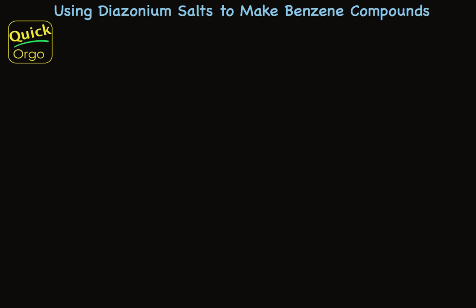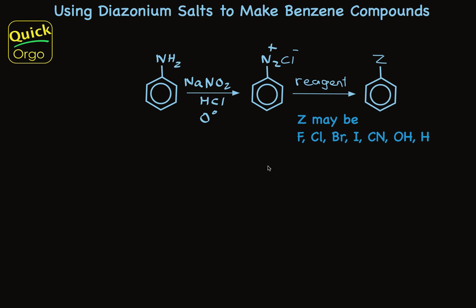I want to show you a really slick method for attaching substituents directly to a benzene ring. When you have an NH2 group on the ring, that can be transformed into something called a diazonium salt using nitrous acid. Sodium nitrite in HCl is a way of making nitrous acid. It's important to keep the reaction cold, because diazonium salts are not stable.